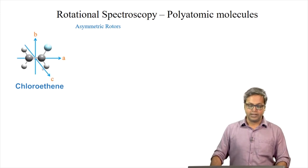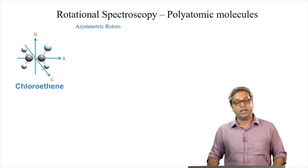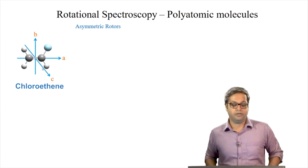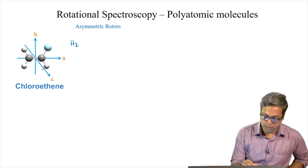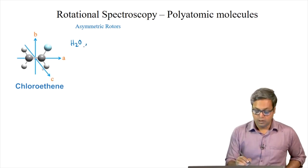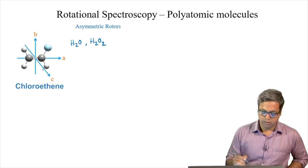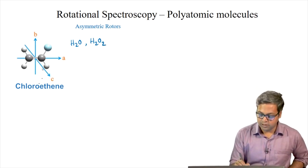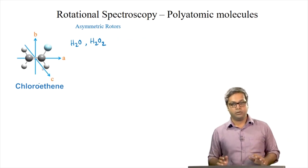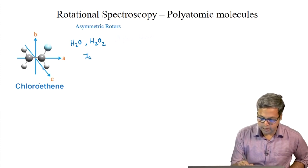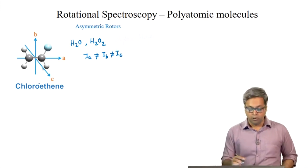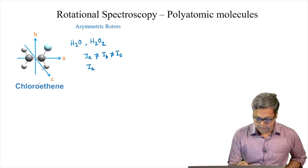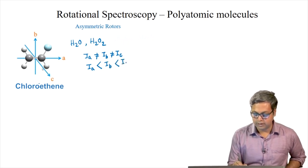The final category is asymmetric top or asymmetric rotor. In fact, a vast majority of molecules are asymmetric. Examples of asymmetric tops are water (H2O) and hydrogen peroxide. For asymmetric rotors, IA ≠ IB ≠ IC, and IA is the lowest value, so IA < IB < IC.